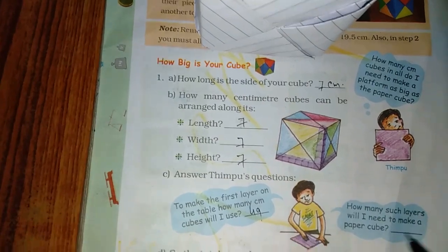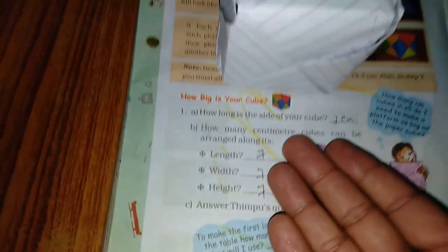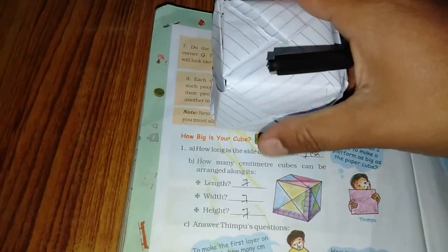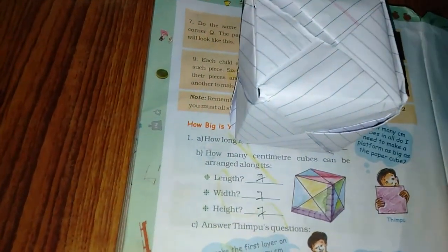How many such layers will I need to make a paper cube? So, how many layers will it be on the whole? Seven.